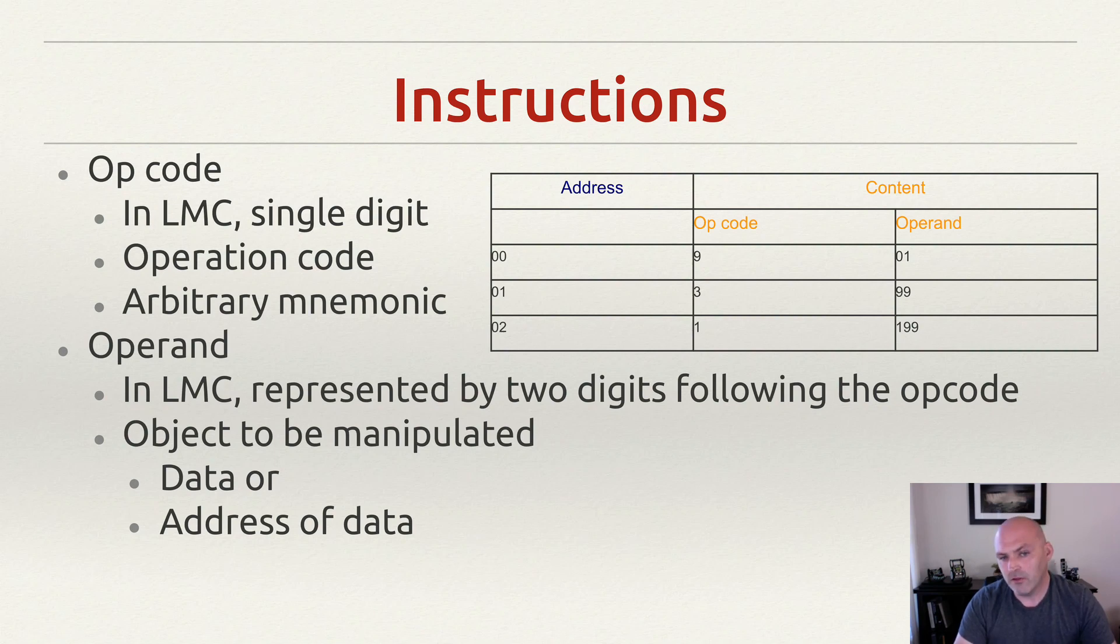Another possibility for an operand is that it could be the line number or, more specifically, the next address in memory that we want to jump the program to if we're branching. In little man computer, our opcodes are always going to be one decimal digit and our operands will always be two. All little man instructions are three digits. Now this also lines up with the amount of storage space that we have in our mailboxes. They all contain three digit value spaces.